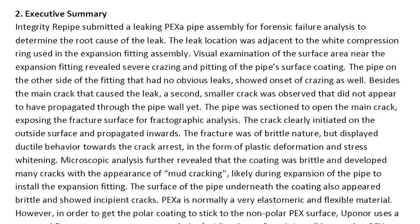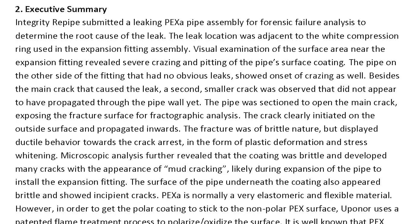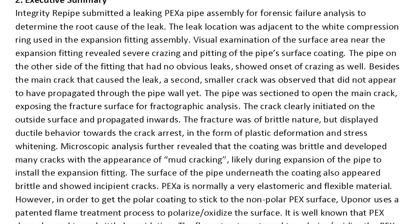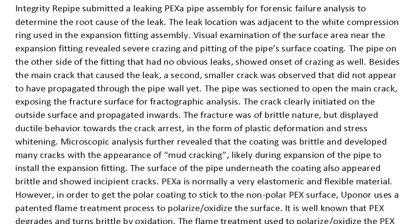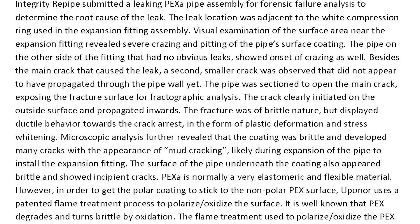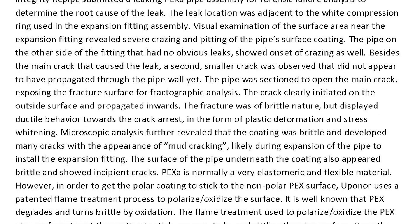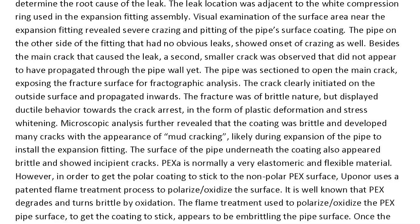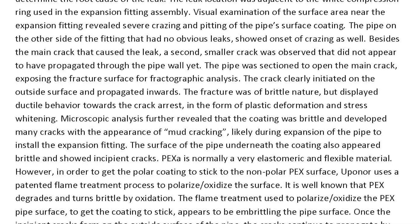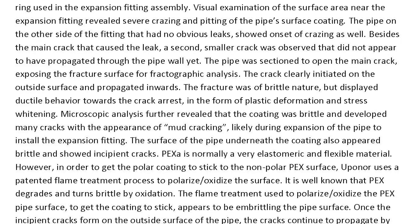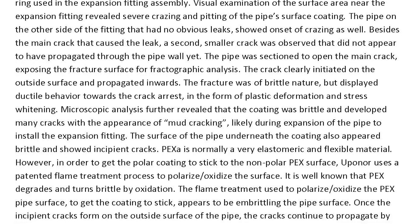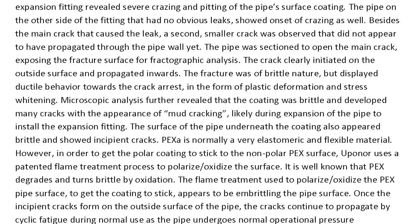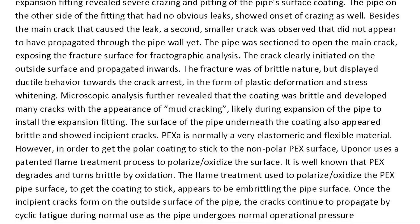Besides the main crack that caused the leak, a second smaller crack was observed that had not yet propagated through the pipe wall. The pipe was sectioned to open the main crack, exposing the fracture surface for fractographic analysis. The crack clearly initiated on the outside surface and propagated inwards. The fracture was of brittle nature but displayed ductile behavior toward crack arrest in the form of plastic deformation and stress whitening. Microscopic analysis further revealed that the coating was brittle and developed many cracks with the appearance of mud cracking, likely during expansion of the pipe to install the expansion fitting.